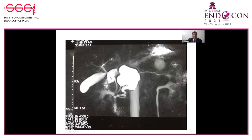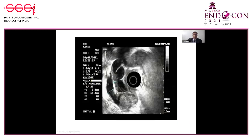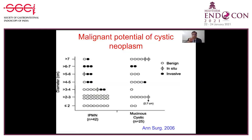An example of a branch duct IPMN — you can see the main duct is normal size and there is about a four centimeter branch duct IPMN arising from a side branch of the pancreatic duct. This is an EUS appearance showing a dilated main duct and a large cystic lesion in the head of pancreas filled with mucin — this is inspissated mucin. Sometimes you see solid lesions or intracystic mural nodules.